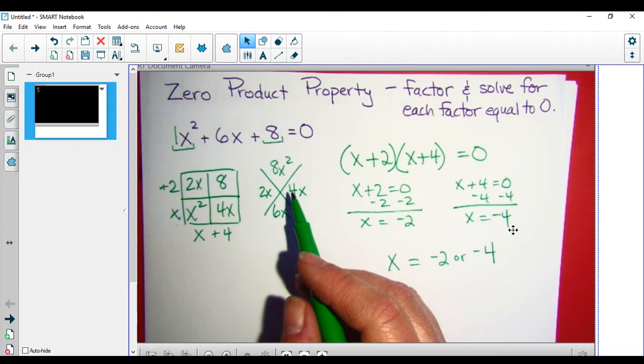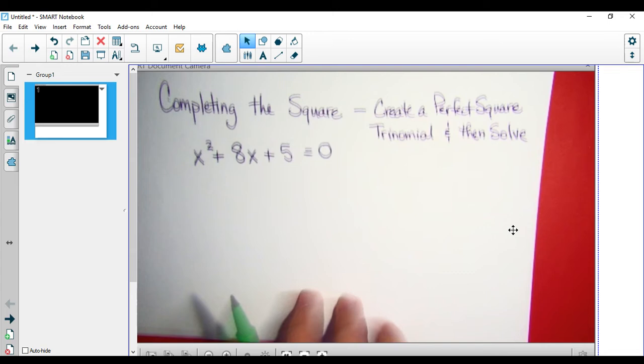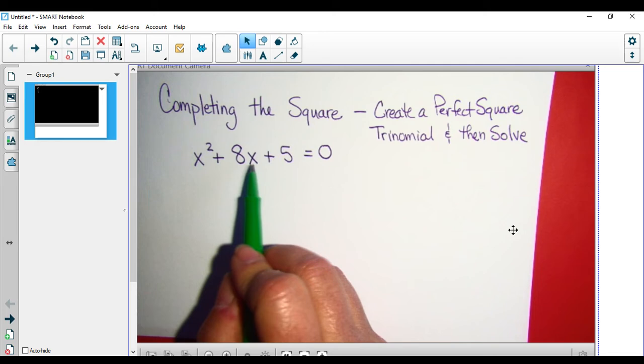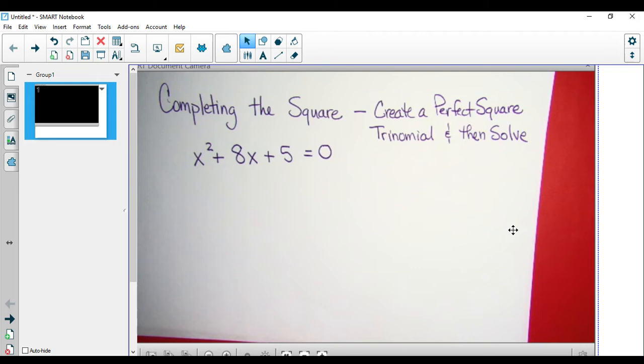If I have something like this one, I know right off the bat I don't have any factors of 5 that are going to give me 8x's. 5x squared, no factors are going to add up to 8x. So I know that that's not going to be a good strategy to use the zero product property.